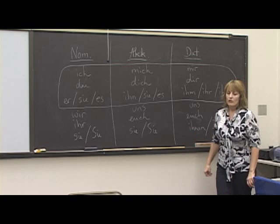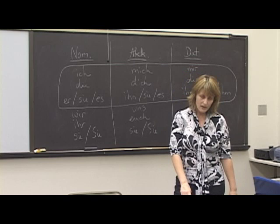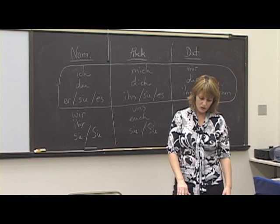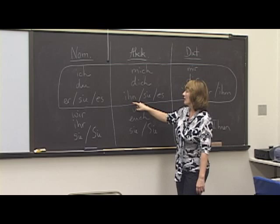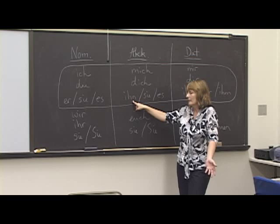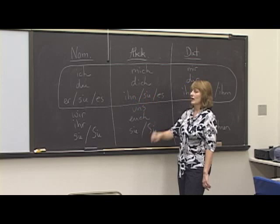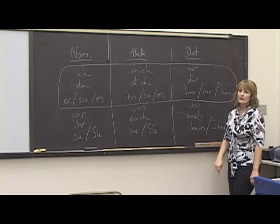Let's look at a masculine direct object — the little teapot. Wem schenkst du den Teekessel? Ich schenke ihn meiner Großmutter. Ihn — it's not because it's a male person, it's just that der Teekessel is masculine, so ich schenke ihn. Was schenkst du deiner Großmutter? Ich schenke ihr den Teekessel — ihr is the dative pronoun for her.